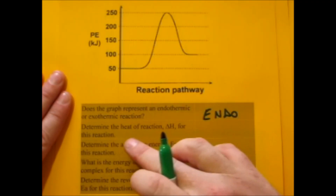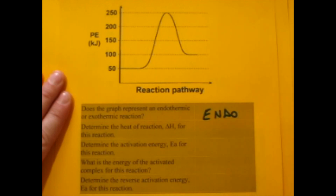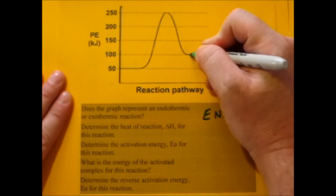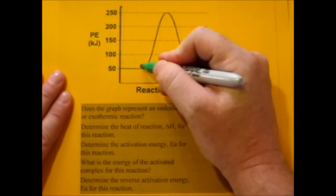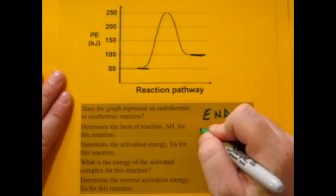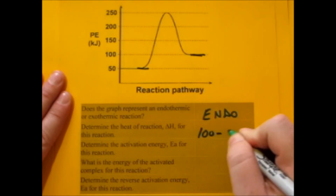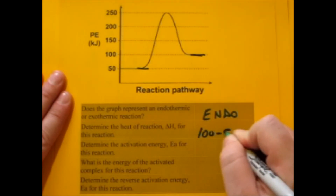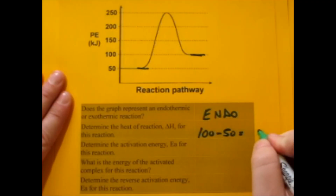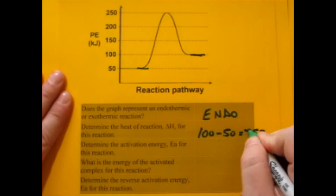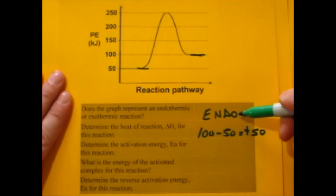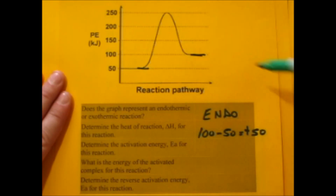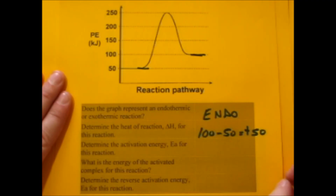Determine the heat of reaction for this reaction. The heat of reaction is the difference between the products and the reactants. Because we have numbers, the products are 100 and the reactants are 50 kilojoules. When you subtract, you get 50 — but make sure you include the positive sign. That positive sign also indicates it's endothermic, and that's your value for delta H.